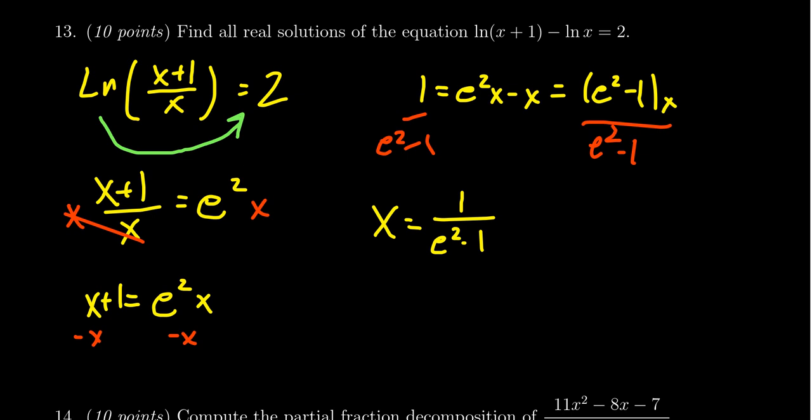Do not approximate this. Leave this as an exact value. I should mention that this value is, in fact, going to be positive. How do I know that? Well, the numerator is 1. That's positive. A fraction is positive if the numerator and denominator have the same sign. So since the numerator is positive, what about the denominator?